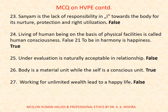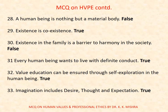Question 26: Under-evaluation is naturally acceptable in a relationship — true or false? False. Question 27: Body is a material unit while the self is a conscious unit — true or false? True. Question 28: Working for unlimited wealth leads to a happy life — true or false? False. Question 29: A human being is nothing but a material body — true or false? False. Question 30: Existence is co-existence — true or false? True. Question 31: Existence in the family is a barrier to harmony in society — true or false? False. Question 32: Every human being wants to live with definite conduct — true or false? True. Question 33: Value education can be ensured through self-exploration in the human being — true or false? True.